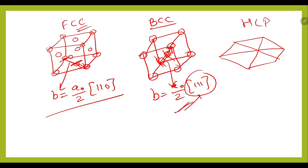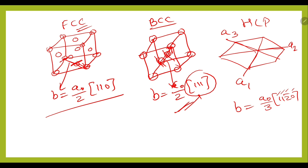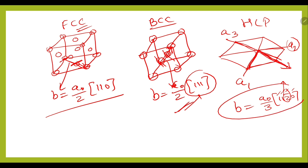For HCP, we show the Burgers vector using the three directions A1, A2, and A3. The Burgers vector is b = (A₀/3)⟨112̄0⟩. Moving 1 unit in A1, 1 unit in A2, and negative 2 units in A3 gives the resulting Burgers vector direction for HCP. These are the Burgers vectors associated with FCC, BCC, and HCP.